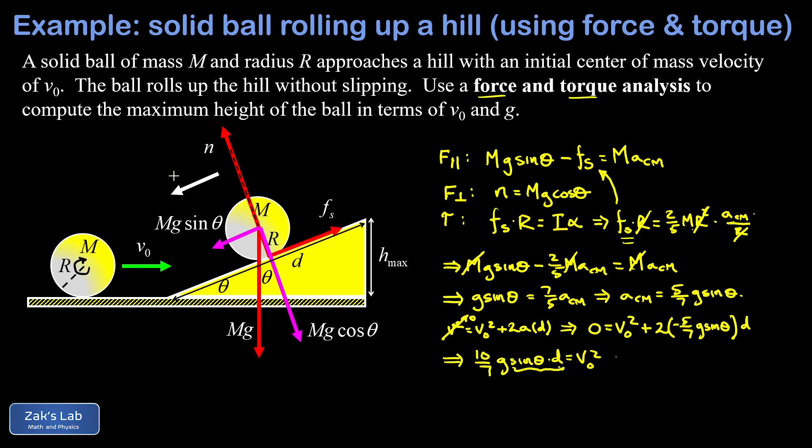And to solve for that I need to divide by g and multiply by 7/10, so I end up with 7v₀²/10g. And that's the same answer we got using the energy approach and we're happy.